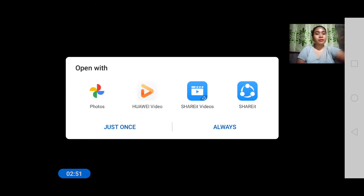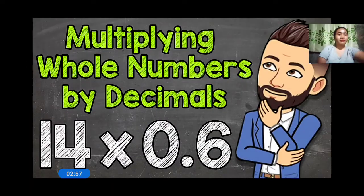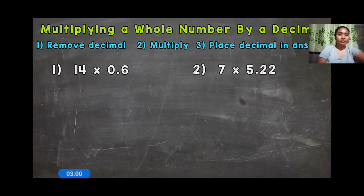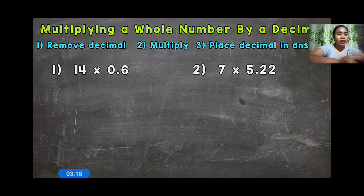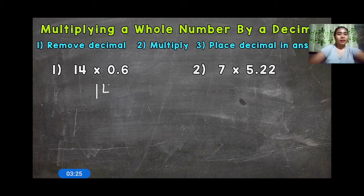Okay, so here is the video. You have to listen. Welcome to Math with Mr. J. In this video, I'm going to cover how to multiply a whole number by a decimal. So let's jump right into number 1, where we have 14 times 6 tenths. The three steps at the top of your screen are: step 1 — remove any decimals within that problem and rewrite the problem without those decimals. Number 1: remove the decimal.